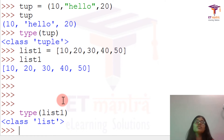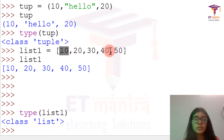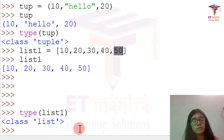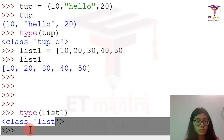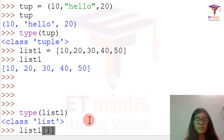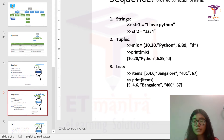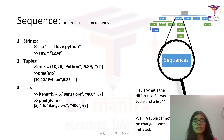We have indexing in Python — indexing starts from 0. So this 10 here is stored at index 0, and 50 is stored at index 4. When I call list1[1], I get the value 20. This is how you can access values stored inside a list. I hope now you are clear with the difference between a list and a tuple.